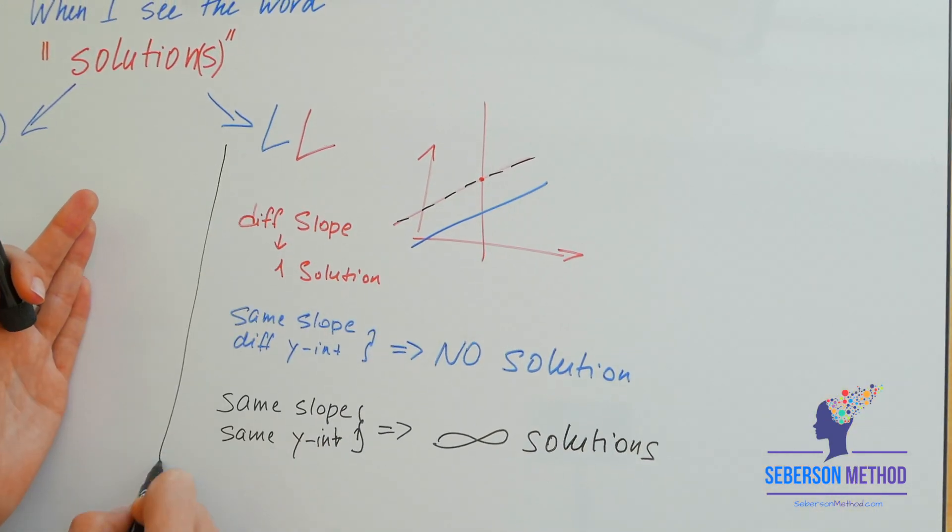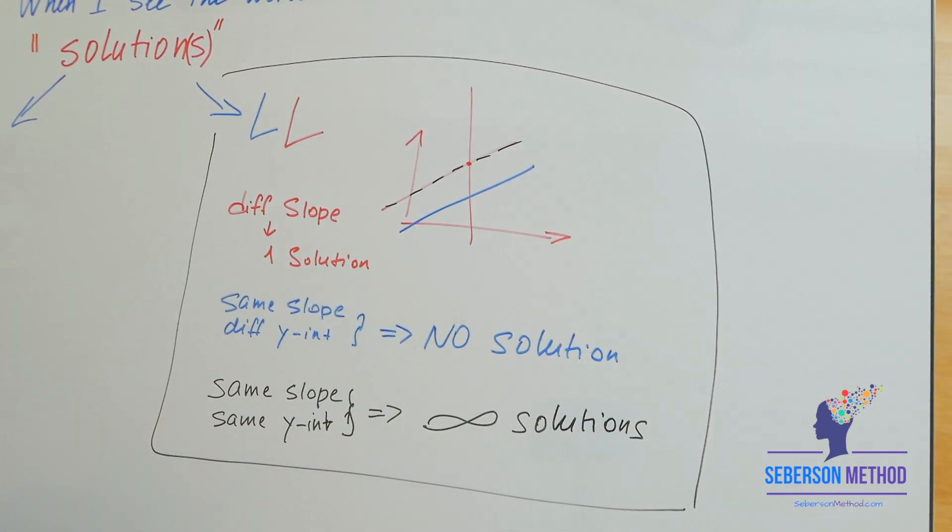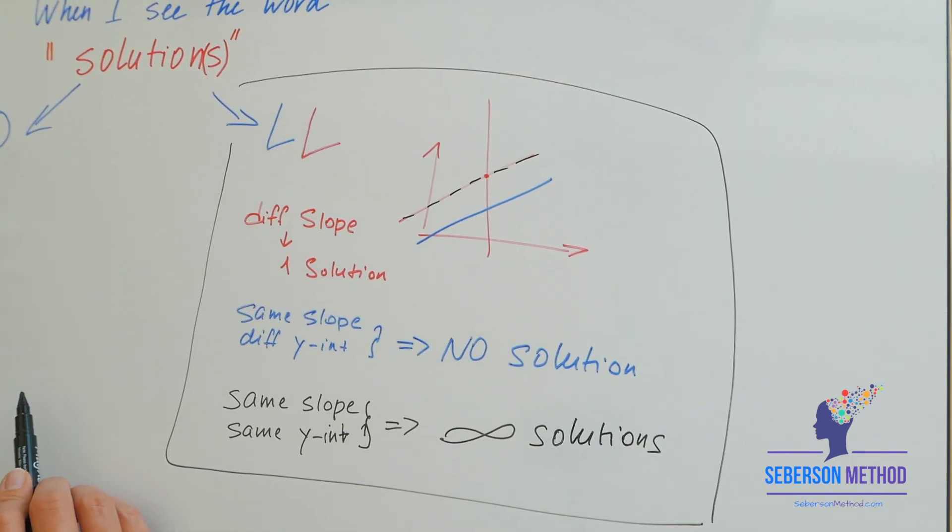This area is for linear equations only. That's what happens when you're asked about the number of solutions and it has to do with linear equations.